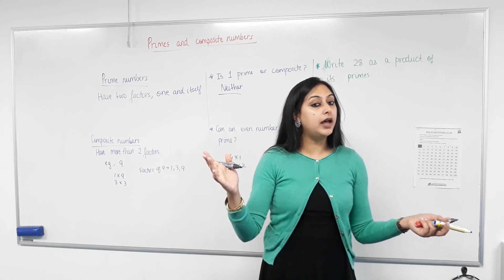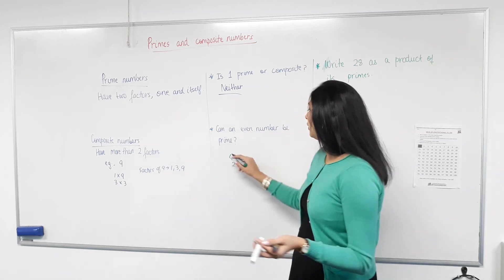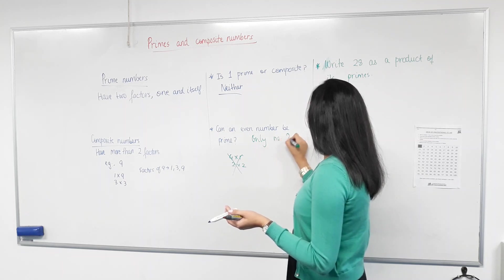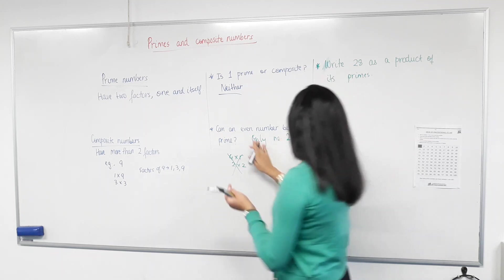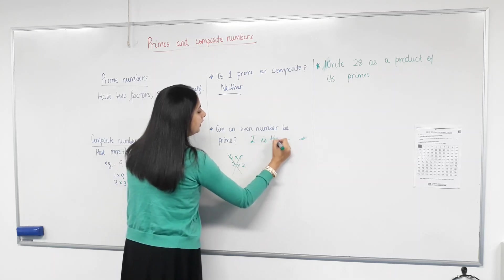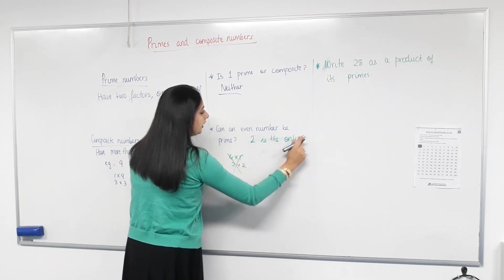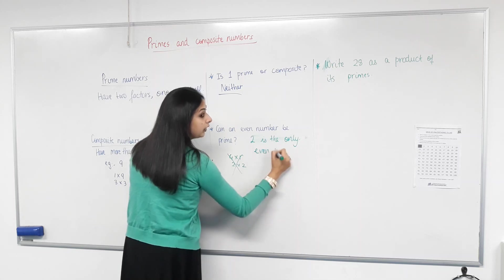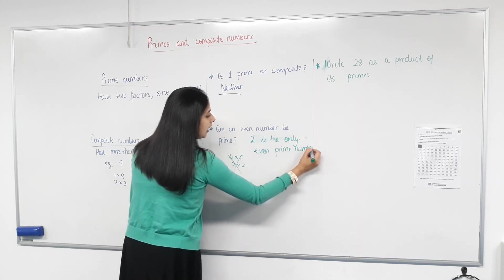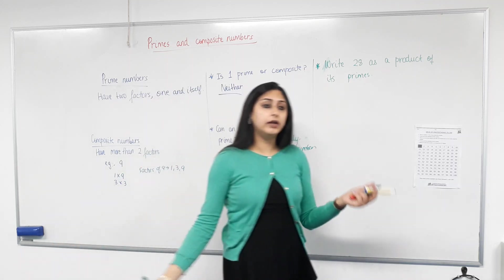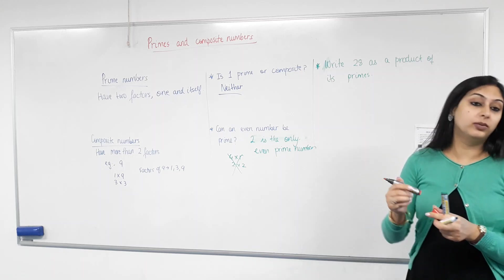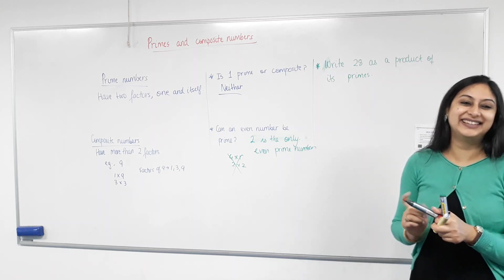All other even numbers will have two as a factor. So, only number two is, sorry, I'll write it in a better way. Two is the only even prime number. Are we all happy with that? Yes. We have no choice but to be happy. Okay. I'm pretty sad now. Well, you have more homework tonight. Are you happy now?